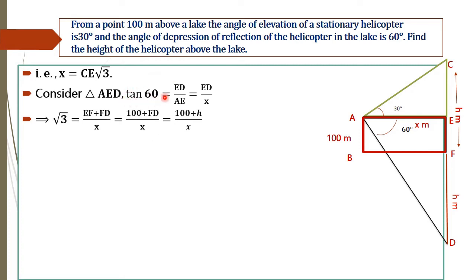Substituting tan 60° = √3, and splitting ED as EF plus FD: EF equals 100 meters because ABEF is a rectangle so AB = EF = 100, and FD equals H. We now have an equation involving the variable H: √3 = (100 + H) / X.